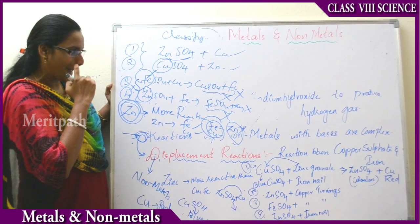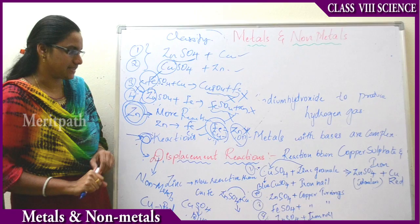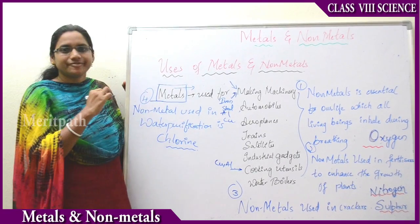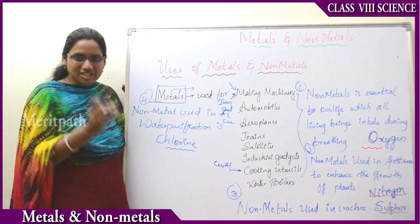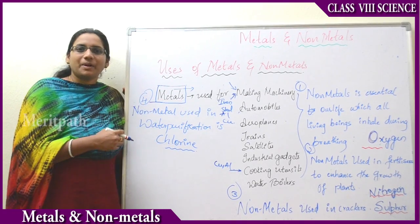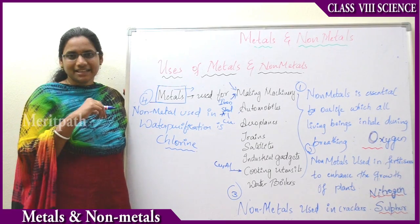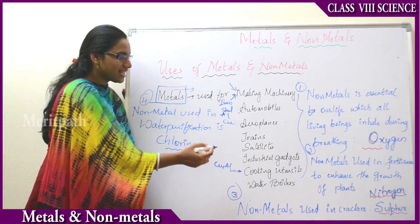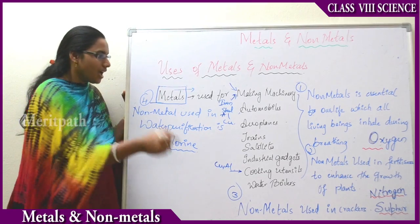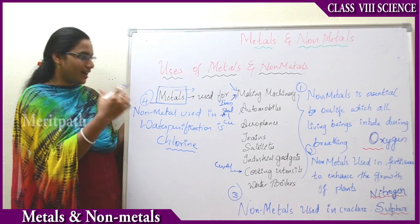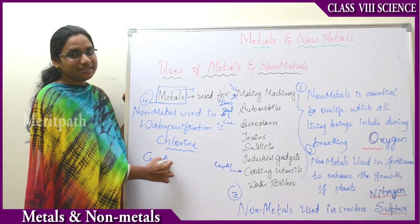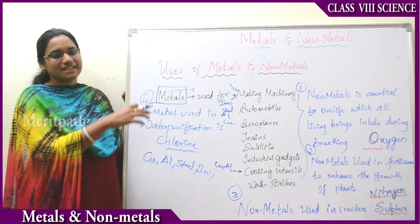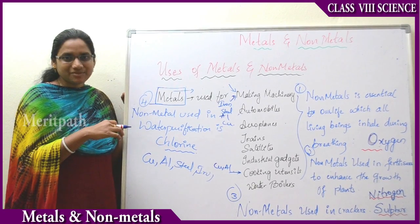Now let us see the uses of metals and non-metals. Metals are used for many purposes such as in machinery, automobiles, aeroplanes, trains, locomotives, kitchen utensils, cooking utensils, industrial gadgets, water boilers, and satellites. The major metals used in these applications are copper, aluminium, steel, and iron.